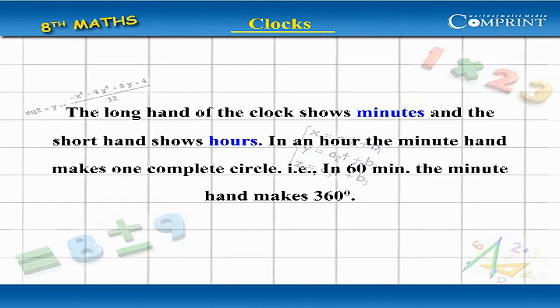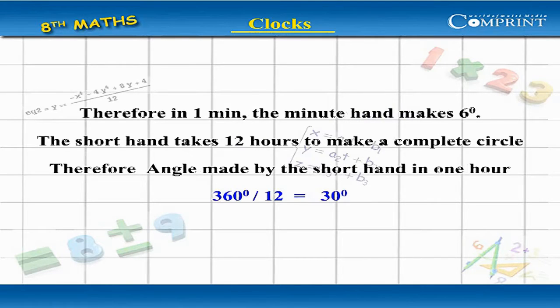That is, in 60 minutes the minute hand makes 360 degrees. Therefore, in one minute the minute hand makes 6 degrees.